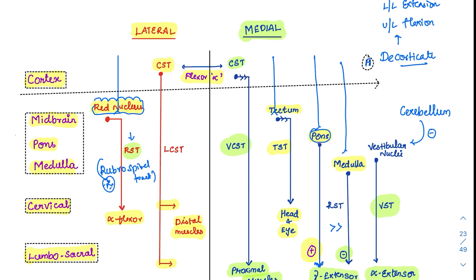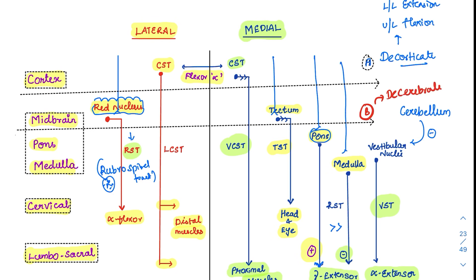Now coming to the second lesion — decerebrate rigidity. The decerebrate lesion is between the superior and inferior colliculus, in the upper pons. In this B diagram — the decerebrate lesion — the rubrospinal tract coming from the red nucleus is also cut. Since the rubrospinal tract was causing flexion and it is now cut, there is nobody to flex the upper limb. So the upper limb goes for extension. The pons is still intact, so the lower limb also goes for extension. In decerebrate rigidity, all four limbs are extended.